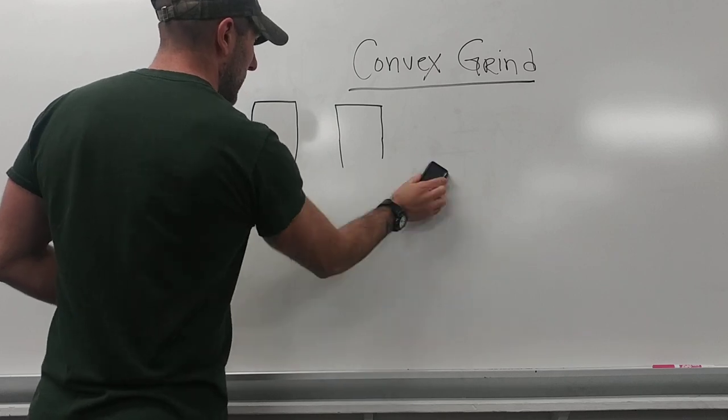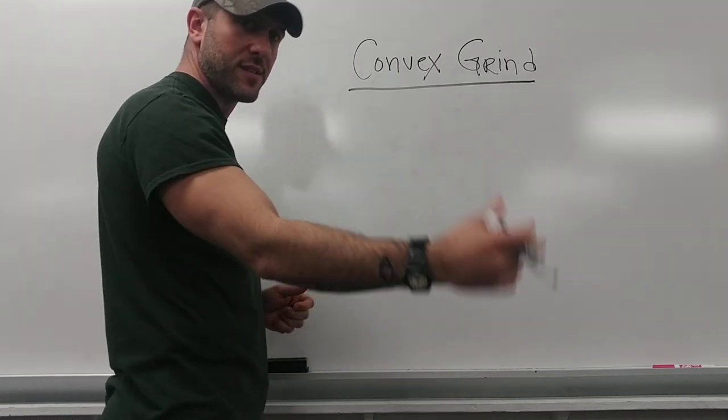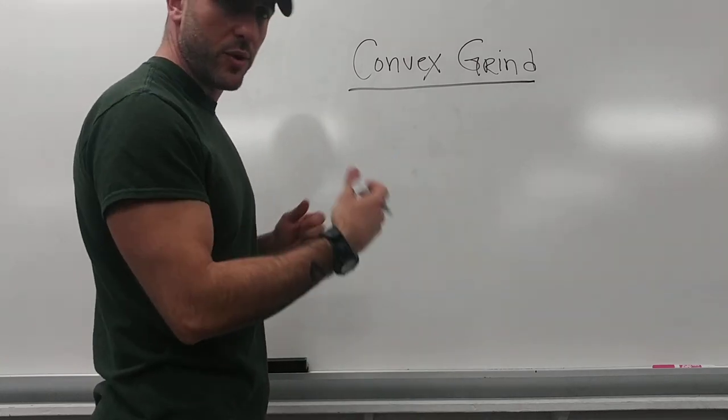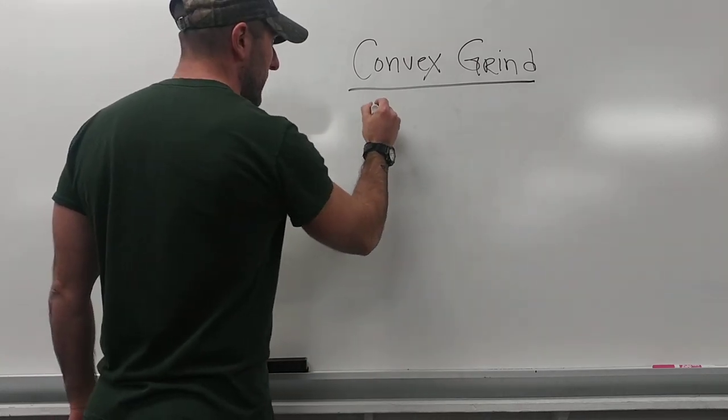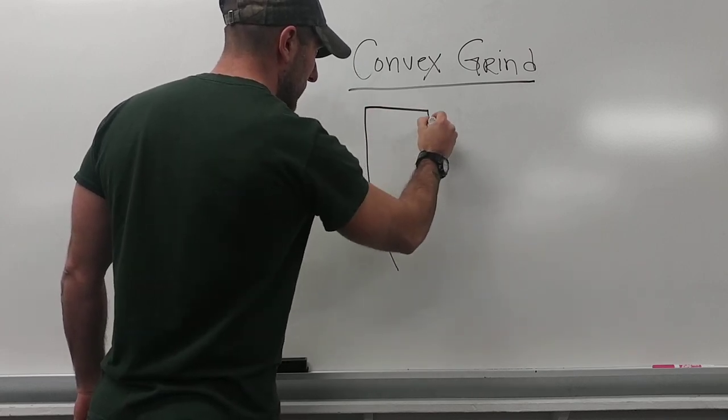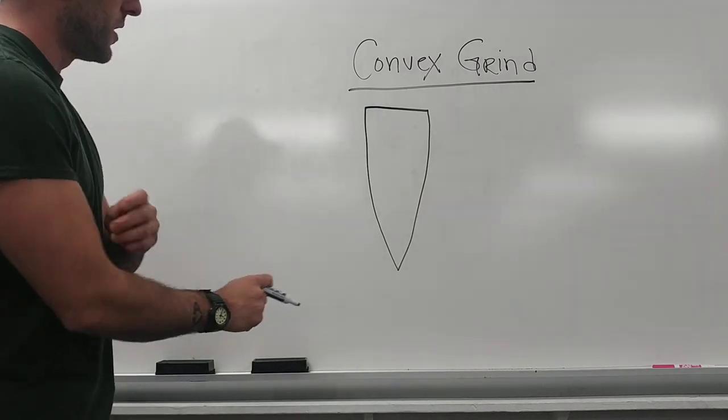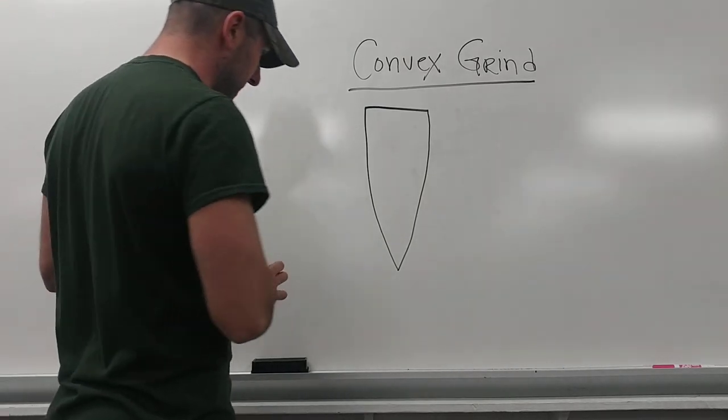If we have a saber convex, we're going to lose a little bit of our slicing ability. The old school Marble knives and another company, Hess, they make beautiful convex grinds. Many of these grinds are so wickedly sharp.